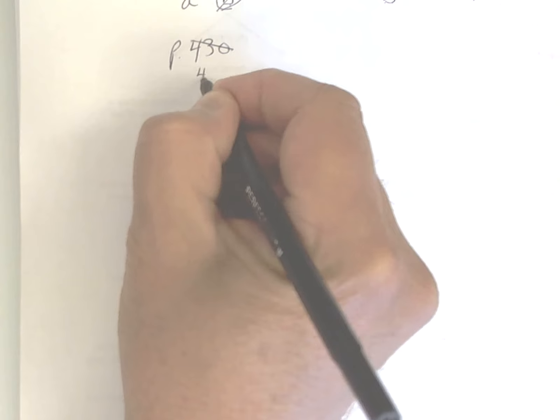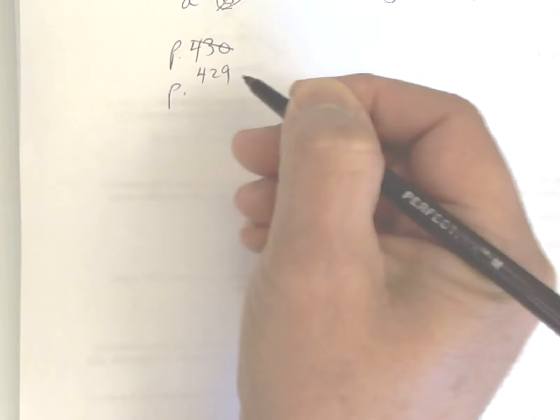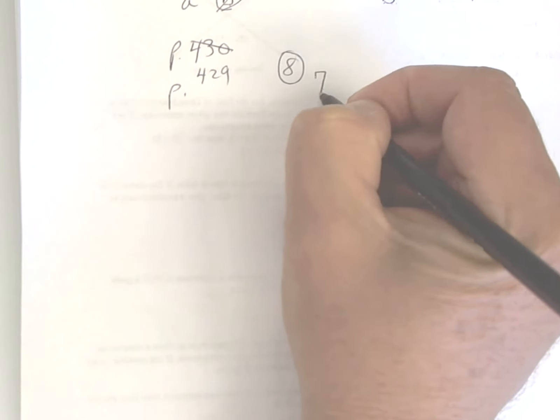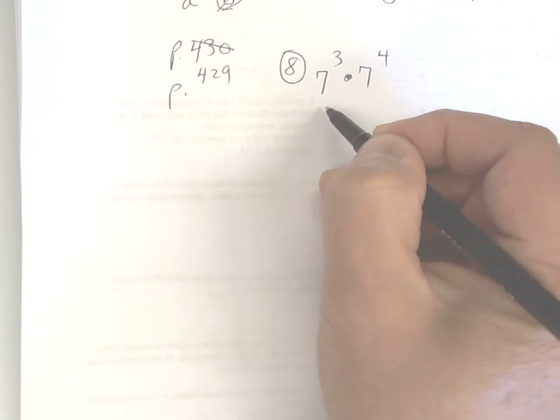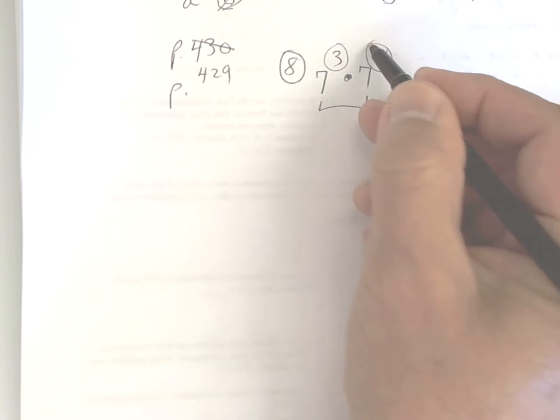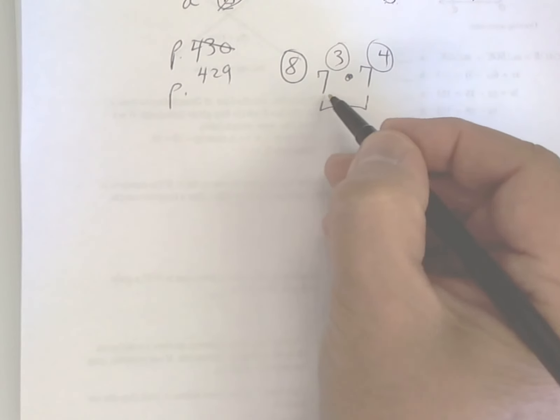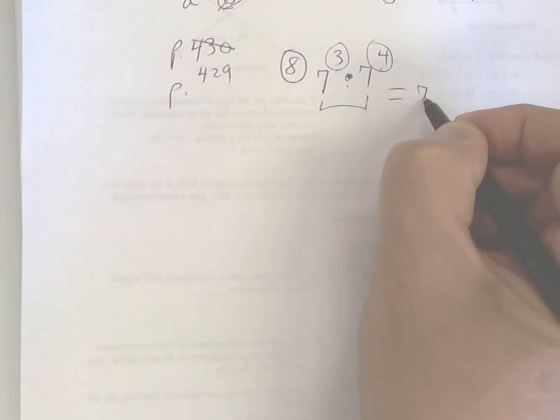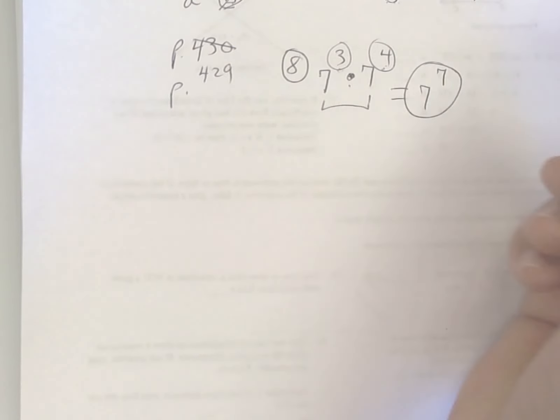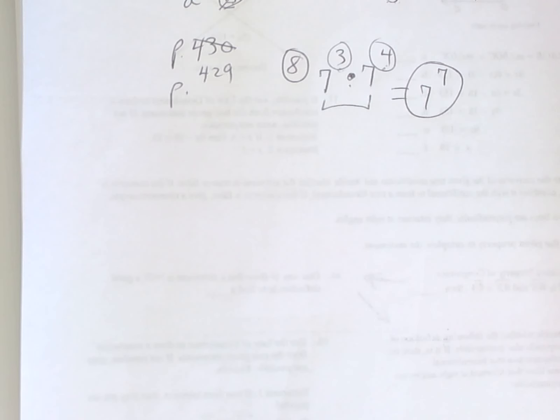When you multiply and you have the same base, you add your exponents. I'm gonna say it again: when you multiply and you have the same base, you add these up. So that gives you 7 to the seventh power, and just leave it like that. What else? Same page.